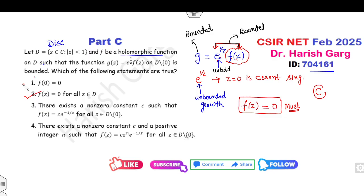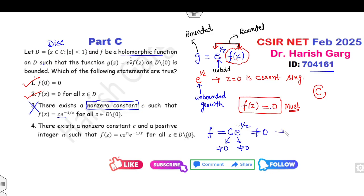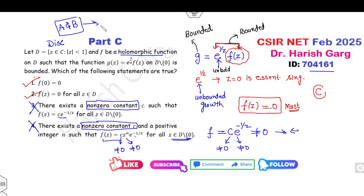If f(z) = 0 for all z, then f(0) = 0 as well. Looking at the third option — there exists a non-zero constant c — but f(z) must be 0 and c is non-zero, so f(z) = c · (something non-zero), which is a contradiction. The fourth option also involves a non-zero c and non-zero z, giving a non-zero function, which is not possible. So the correct options are a and b. The key concept is that only the zero function can cancel out the unbounded growth of e^(1/z).